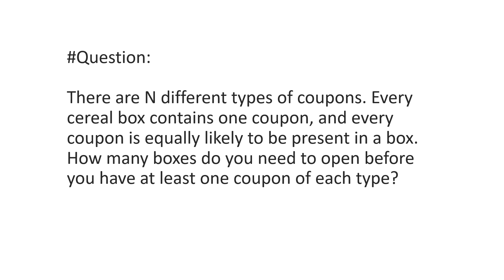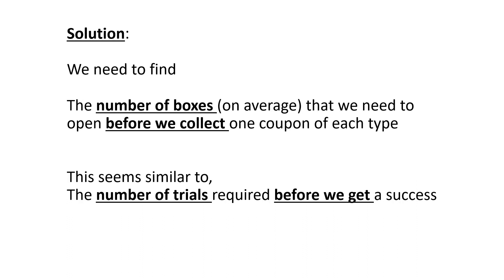There are N different types of coupons. One cereal box contains one coupon and every coupon is equally likely to be present in a box. How many boxes do you need to open before you have at least one coupon of each type? We need to find the number of boxes on average that we need to open before we collect one coupon of each type.